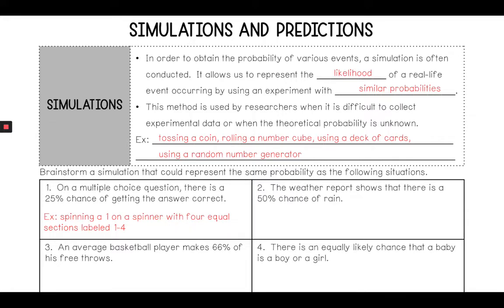The weather report shows that there's a 50% chance of rain. Well that's a pretty simple one. We would go ahead and just use flipping a coin, and you could flip on tails or heads. In this case it says flipping tails on a fair coin.